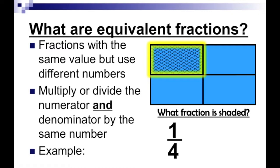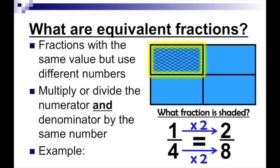Now, what happens if I multiply the numerator and the denominator by two? That's going to give me two over eight. When we multiply by two, each of our pieces will now have two pieces. So we'll have two, four, six, eight total pieces. And of the eight total pieces, two are shaded.